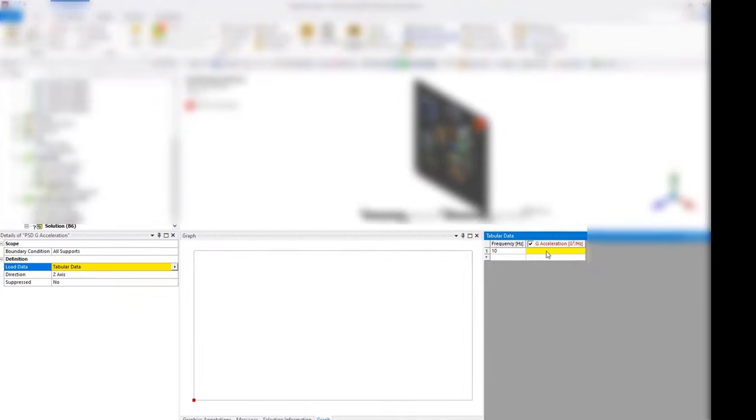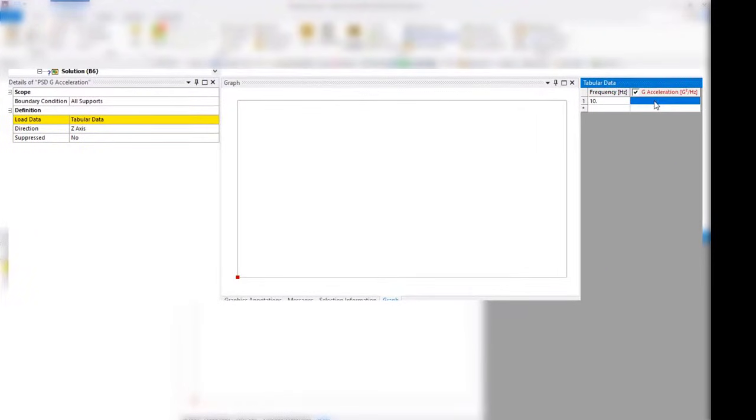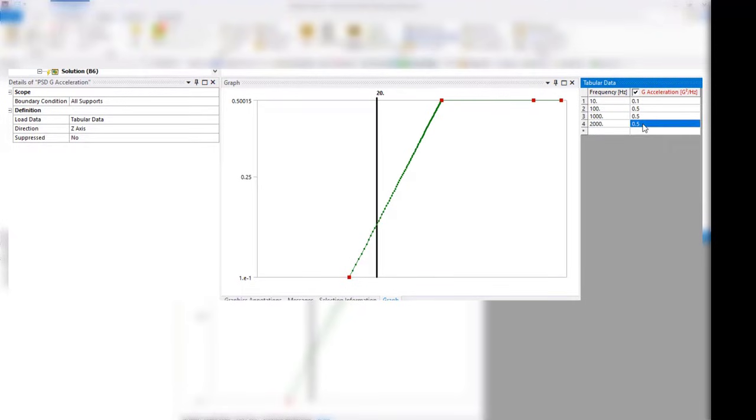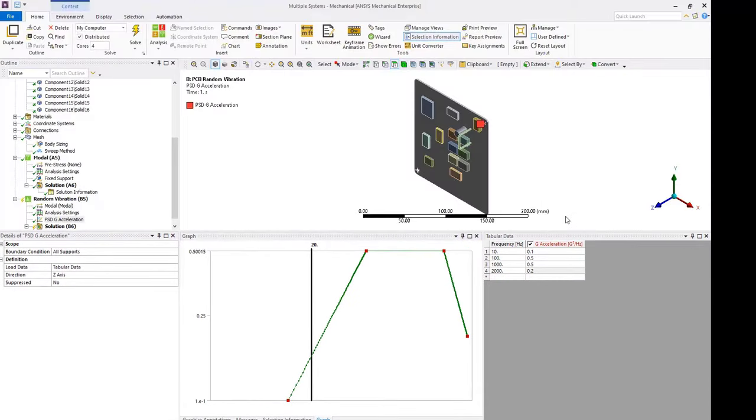G-acceleration data is defined at 0.1 for 10Hz, 0.5 for 100 to 1000Hz, and 0.2 for 2000Hz. The random vibration analysis is now ready to solve.